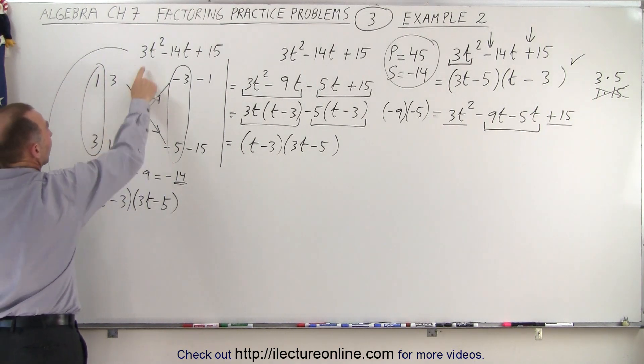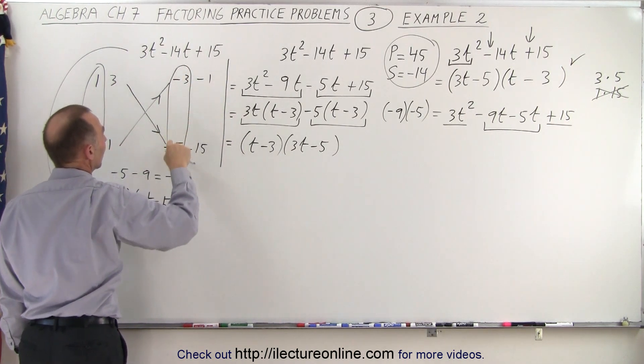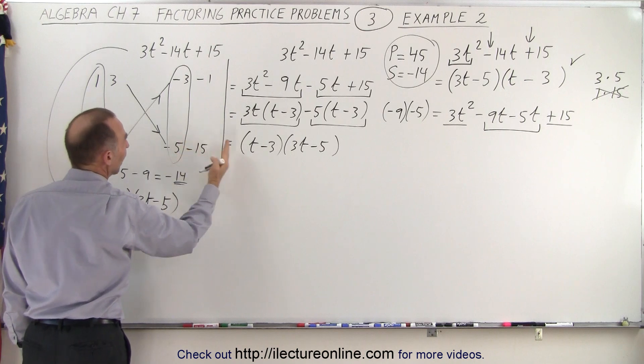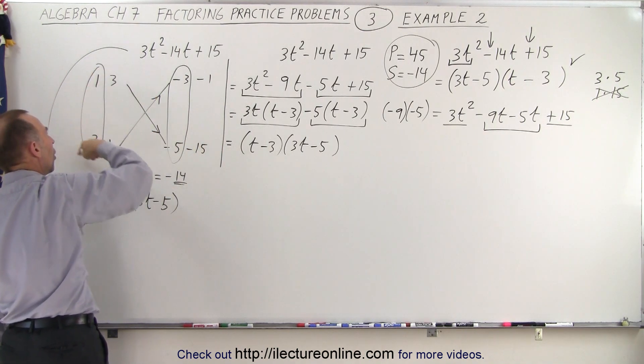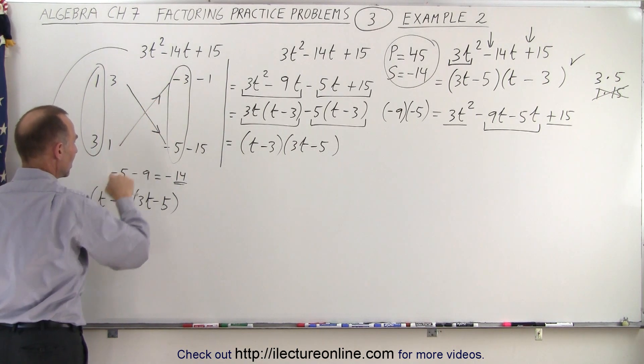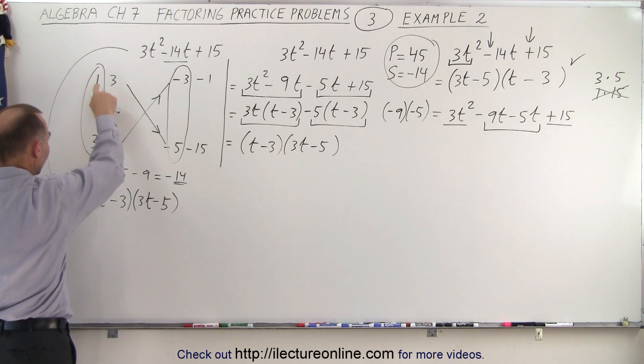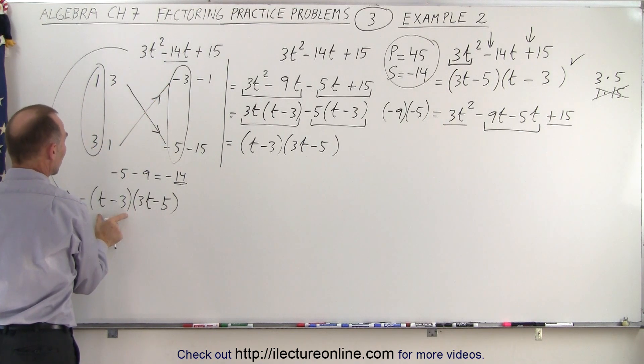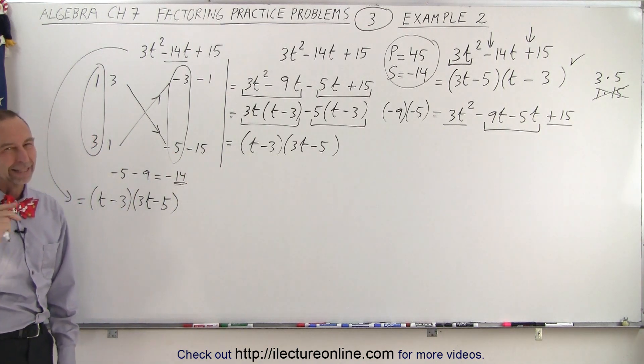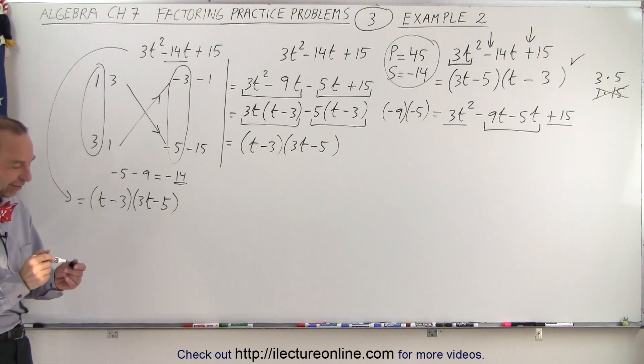We put all the combinations down to get the number 3, 1 times 3 or 3 times 1. We put all the combinations down to get minus 15. Minus 3 times minus 15 is a plus 15, minus 5 is a plus 15, minus 1 minus 15. We don't have to put the other combinations down because we're ready to have all the possible combinations here. And then we notice that 1 times a negative 5 plus 3 times a negative 3 adds a negative 14 which is the middle term. We got 1 times t minus 3 for the first binomial and 3 times t minus 5 for the second binomial and that's the factored form. And that is how it's done in any of the three methods and you determine which method you prefer. That's how we do it.